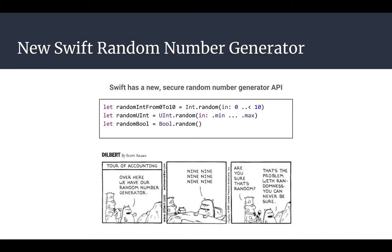The Swift standard library now includes a new random number generator API. The problem being solved is that existing APIs like rand or arc4random are vulnerable to prediction or aren't cryptographically secure, so an attacker can potentially predict what random numbers your app is going to generate, which can enable some pretty nasty things depending on what your app does with RNG. With this new interface, you can call random on the types that support this, optionally providing a range if it makes sense for the object type. You can check out the Swift proposal for all the specifics on this API.